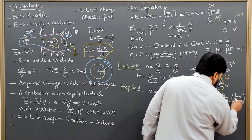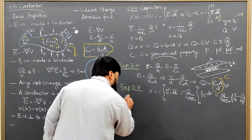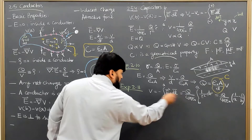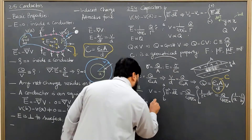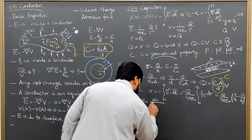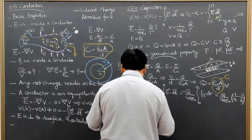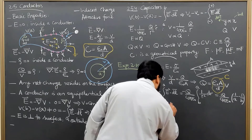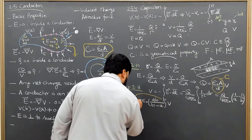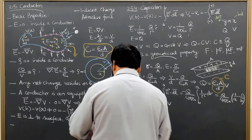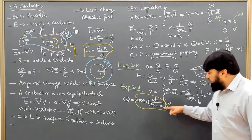Reshuffling the expression, we get AB in the numerator and (B minus A) in the denominator. Since we want to find the capacitance, Q equals 4πε₀ times AB divided by (B minus A), multiplied by V.